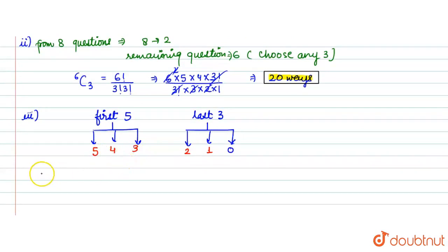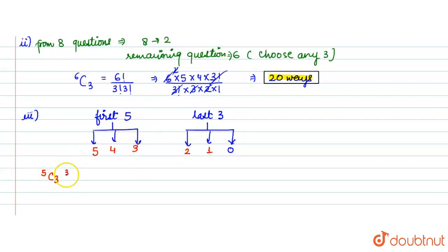This combination is what we can do. We first choose 3 from the first 5 questions — that is 5C3. And then we choose 2 from the remaining 3 questions — that is 3C2. This is Case 1.